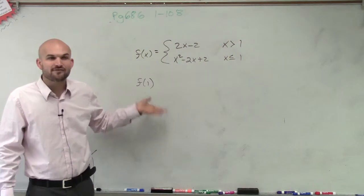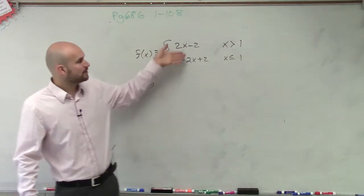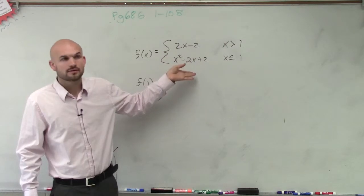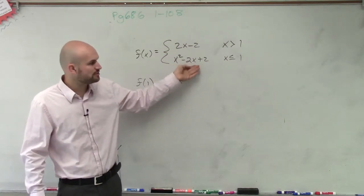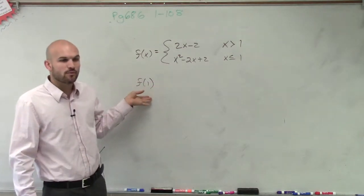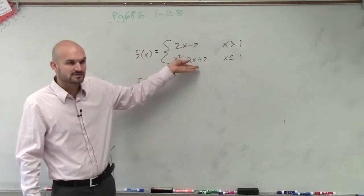So I want you to evaluate for f of 1. So am I going to have to apply the top function or the bottom function? The bottom, because this is the function you use for values that are less than or equal to 1. Since we're trying to evaluate for 1, we only want to use this function.